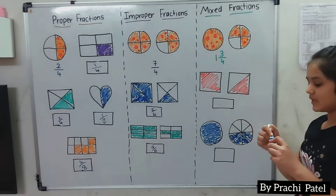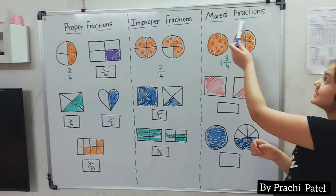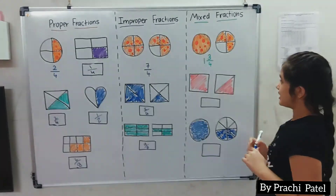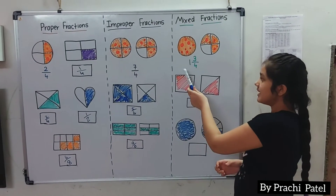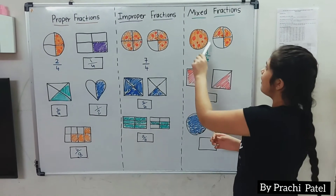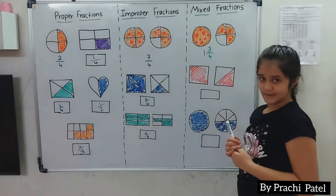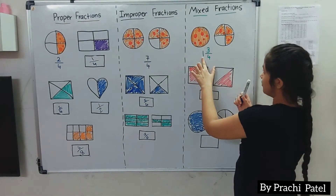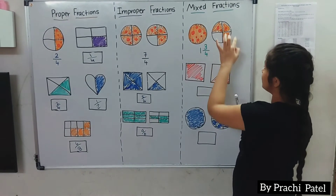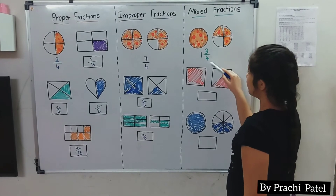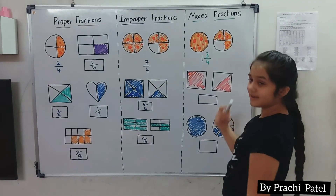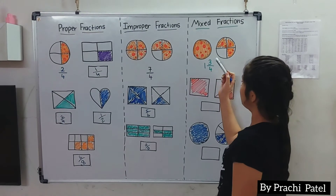Now we are going to learn mixed fractions. A mixed fraction is written like this: 1 whole and 3 by 4. I have 1 whole pizza, which I write as the whole number. Then I have 4 pieces in the second pizza, so I write 4 in the denominator. And 1, 2, 3 pieces are colored, so I write 3 on top.